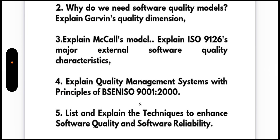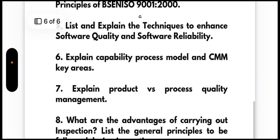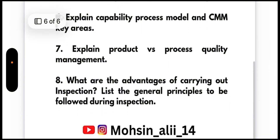Seventh, list and explain the techniques to enhance software quality and software reliability. Also, explain the Capability Maturity Model (CMM) and its key process areas. Eighth, explain product versus process quality management. And finally, what are the advantages of carrying out inspection, and list the general principles to be followed during inspection.